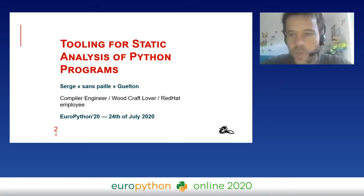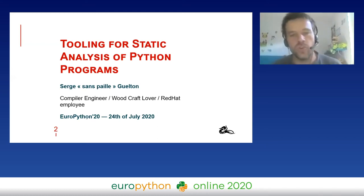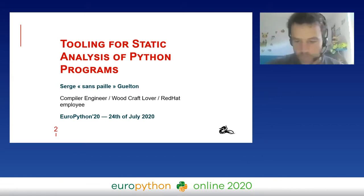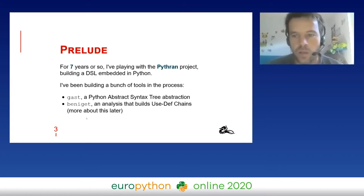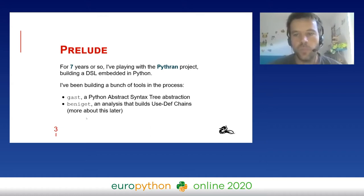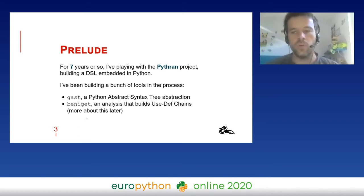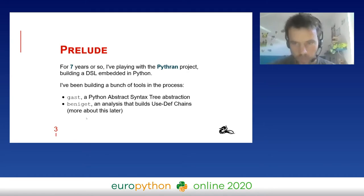I'm a compiler engineer, but I have a lot of other hobbies. I'm going to present some tooling to do some partial static analysis on Python programs, based on my previous experience on that topic. That previous experience is mostly based on the Pythran project. Some of you may know it — it's an embedded DSL embedded into Python, targeted at scientific computing, which makes it possible to strictly compile Python kernels into efficient native libraries.